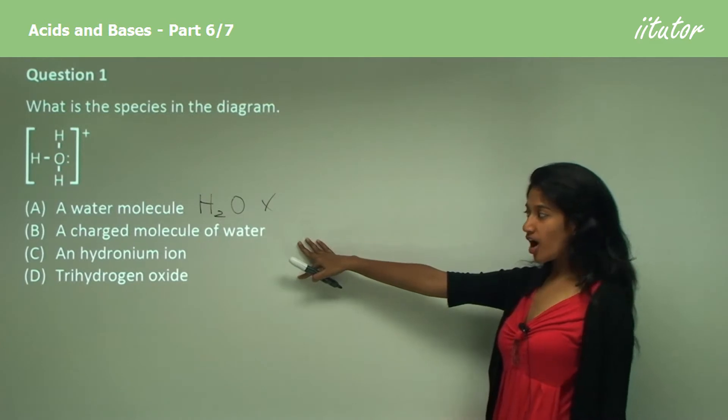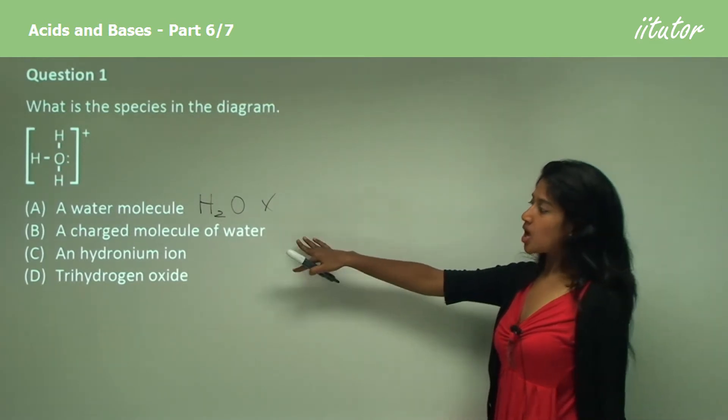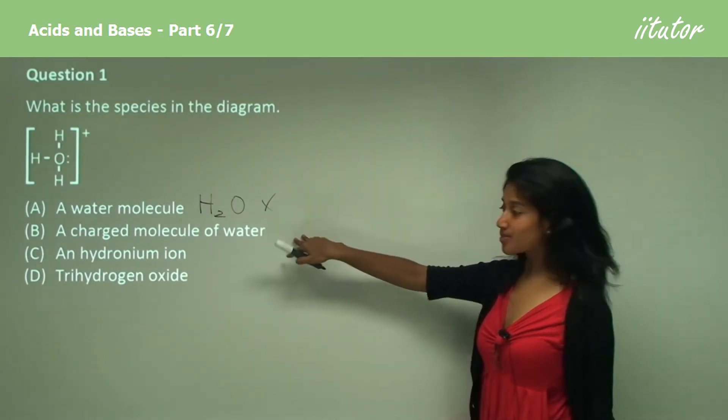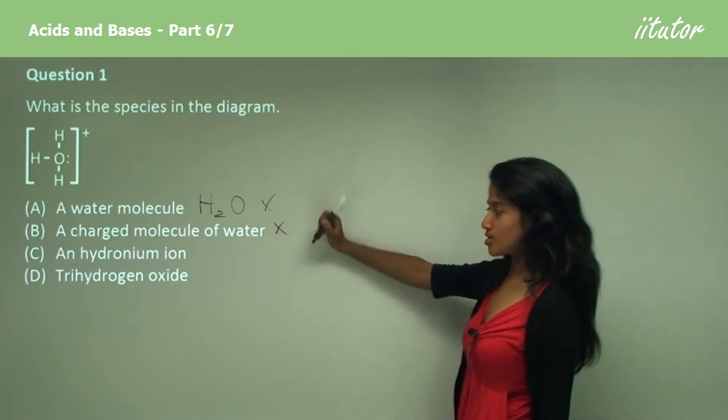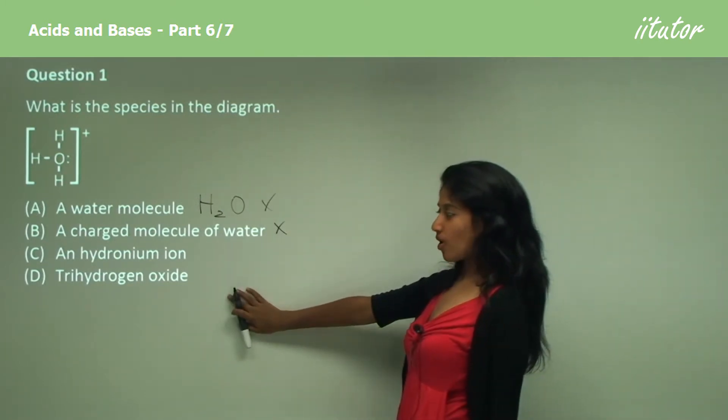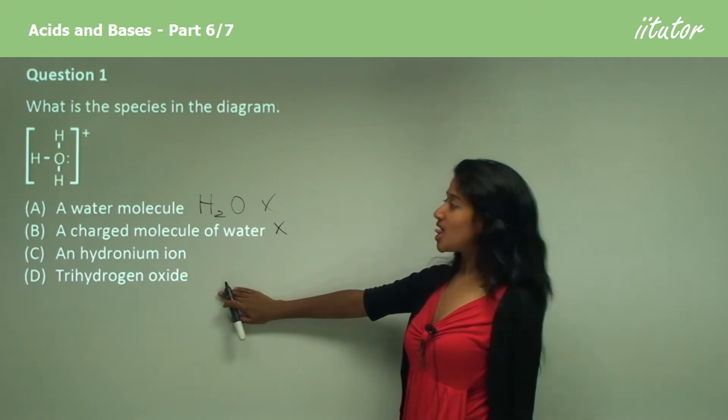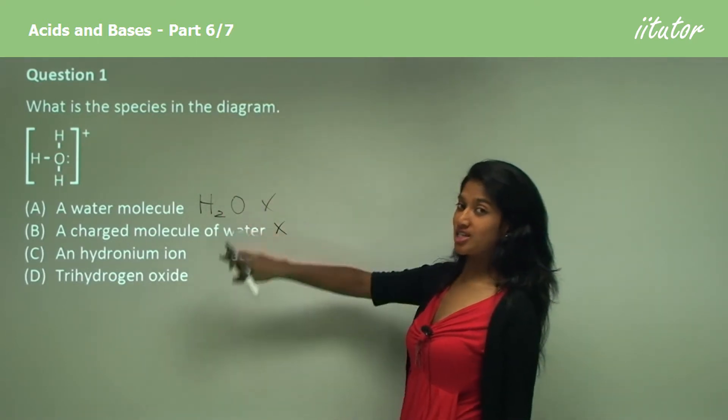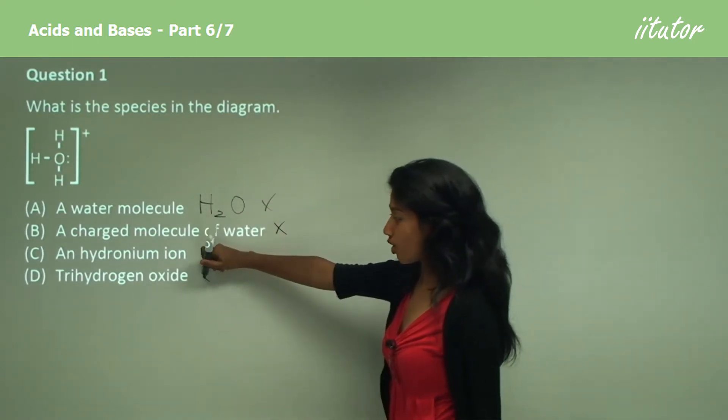Is it a charged molecule of water? Option B is not correct because a charged molecule of water does not exist. Trihydrogen oxide, as I told you before, this is an ion so it is not a molecule, it's not a compound.